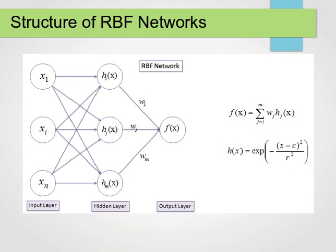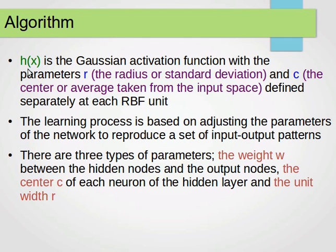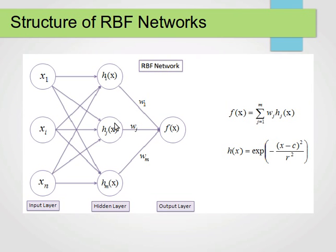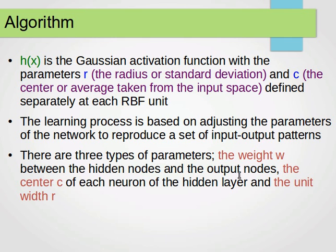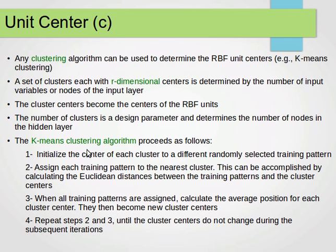Our transfer function is the Gaussian activation function with parameter R for the radius (also known as the spread) and C for the center or average, taken from the input space and defined separately at each RBF unit. The learning process adjusts the network parameters to reproduce a set of input-output patterns. In general we need to find three things: the weights for each hidden node, and for each node the center C and the width R.